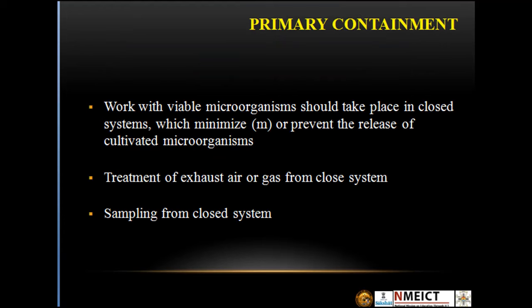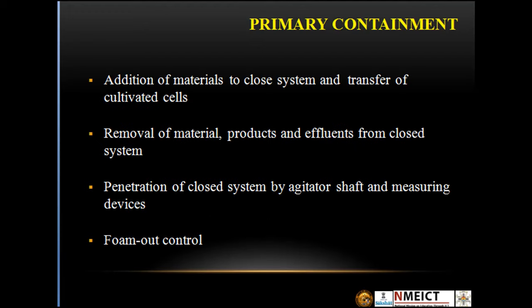Regarding primary containment: work with viable microorganisms should take place in a closed system to minimize or prevent the release of cultivated microorganisms. Key considerations include treatment of exhaust air or gas from the closed system and sampling from it; addition of material to the closed system and transfer of cultivated cells; removal of material, products, and effluent from the closed system; and penetration of the closed system by agitator shafts or measuring devices and foam-out control.